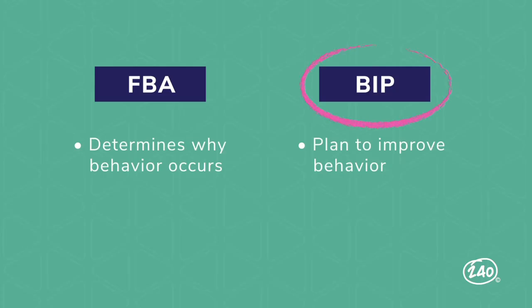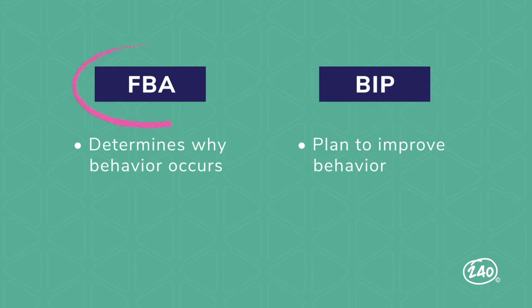BIP is short for Behavior Intervention Plan. A BIP is a formal written plan to address and improve student behavior — it defines the undesired behavior, describes why it is occurring, and outlines a plan to use strategies and supports to help. An FBA determines why a behavior occurs, and a BIP is a plan created to improve the behavior.